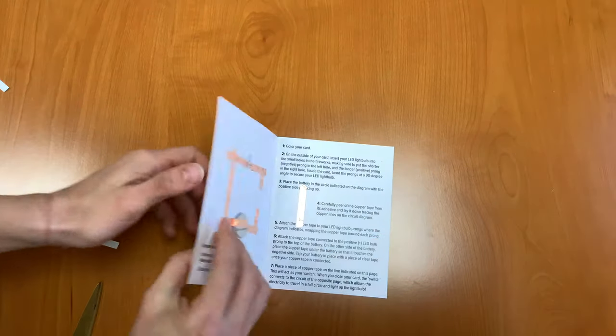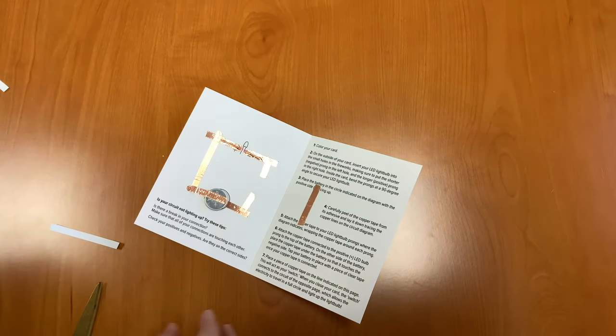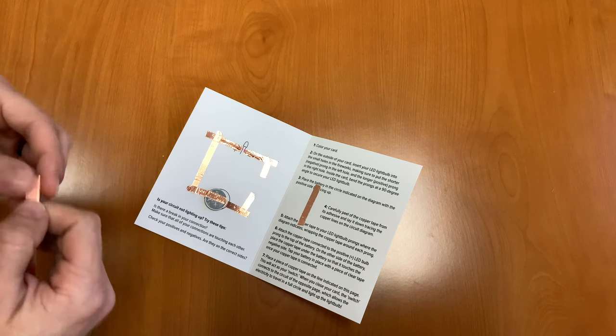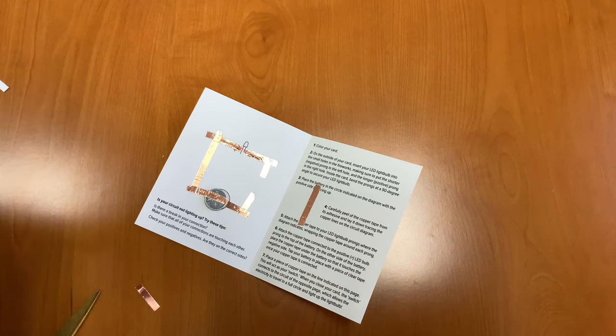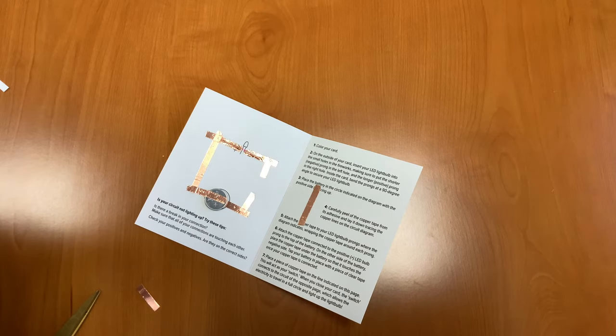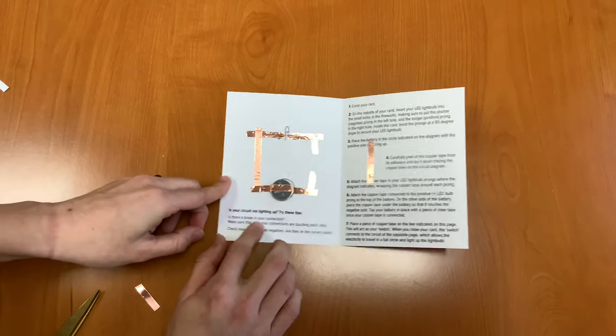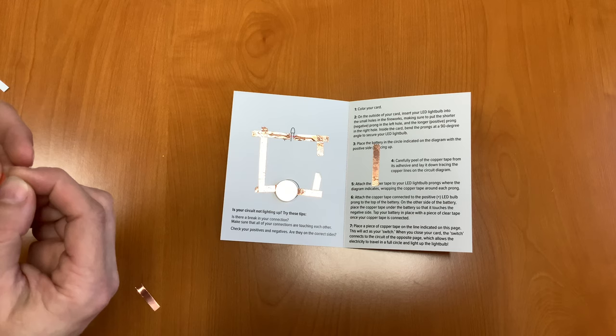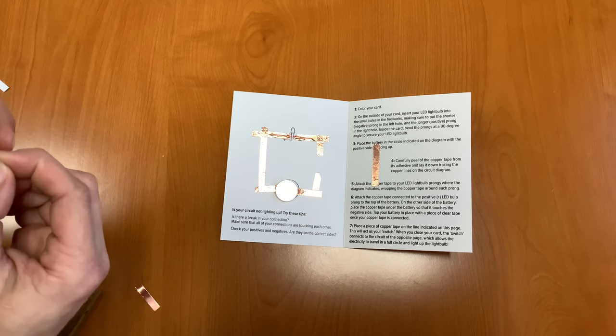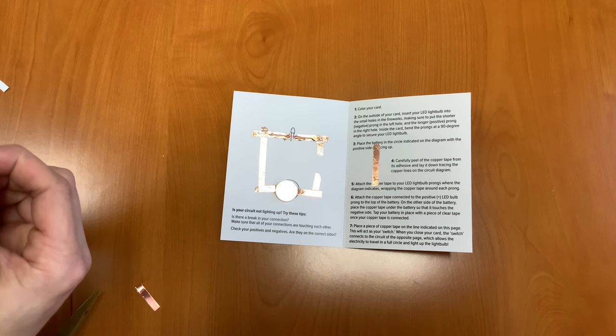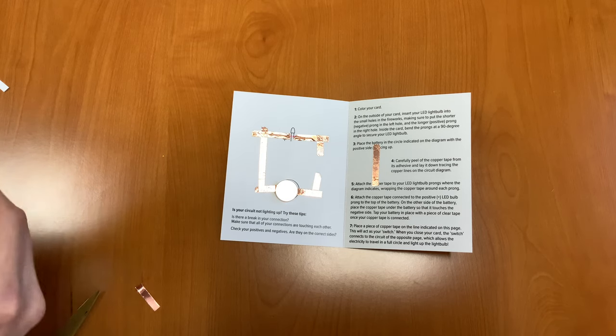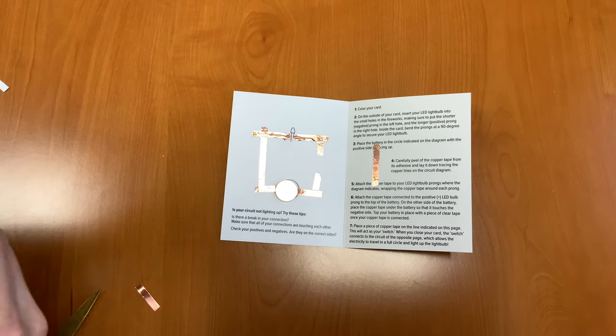Now my circuit card isn't lighting up the best, so I'm going to add a little bit more copper tape. And if your circuit card isn't lighting up, try these tips. See if there's a break in your connection, so that's what I'm checking right now. Because our connection was there, we could see the light bulb lighting up, but it was weak because it was not staying lit. And if that doesn't work, then check your positives and negatives and make sure that they're all on the correct side.